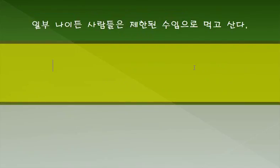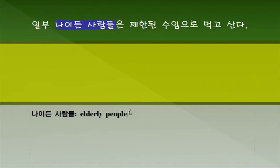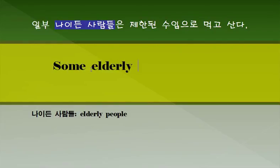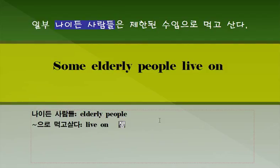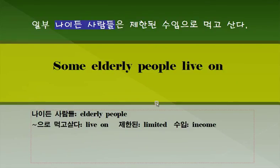두 번째 문장입니다. 일부 나이 든 사람들은 제한된 수입으로 먹고 산다. 나이 든 사람들 영어로 어떻게 표현하죠? Older people 이 표현을 쓰면 됩니다. 일부 나이 든 사람들: Some older people. 먹고 살다라고 하는 표현은 Live on이라고 하는 표현이 있습니다. 제한된이라고 하는 표현은 Limited 이 표현을 쓰면 됩니다. 수입이라고 하는 표현은 Income. Live on limited income.